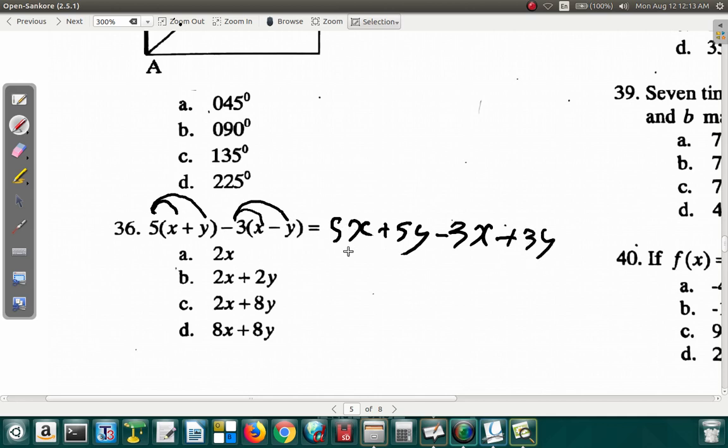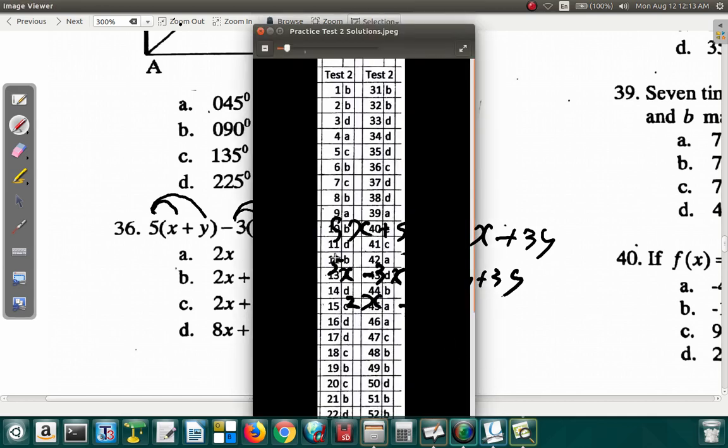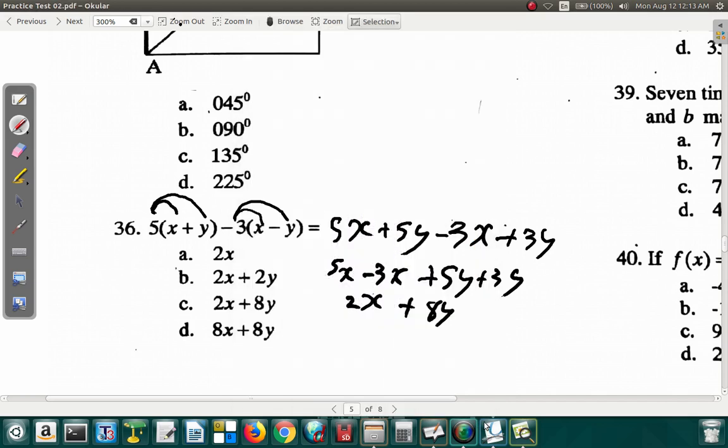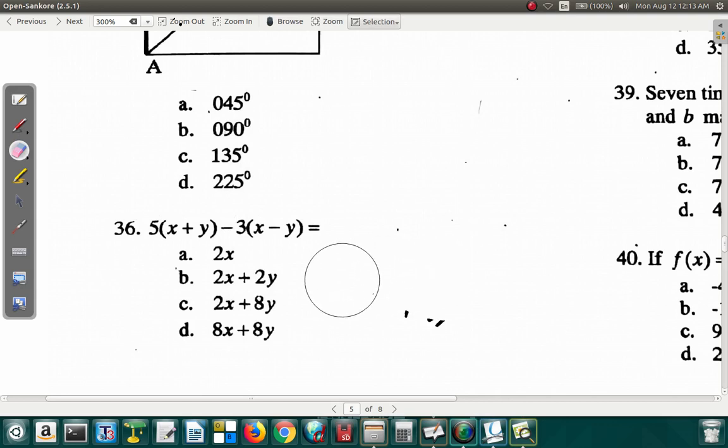Let's combine like terms. 5x minus 3x, and then plus 5y plus 3y. 5 minus 3 is 2, so that's 2x plus 5 and 3 is 8, that's 8y. So 2x plus 8y, that's C. Question 36 is C.